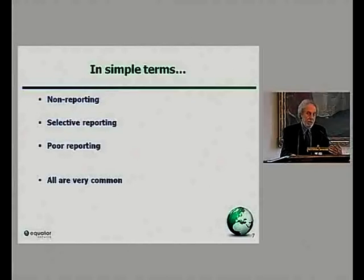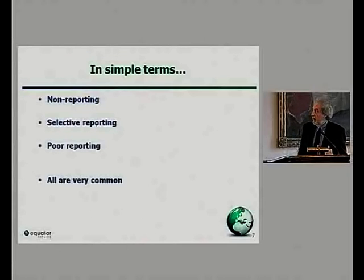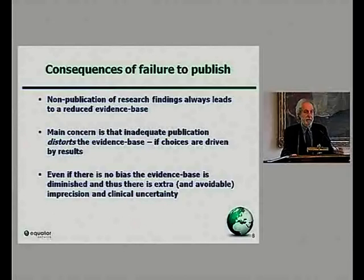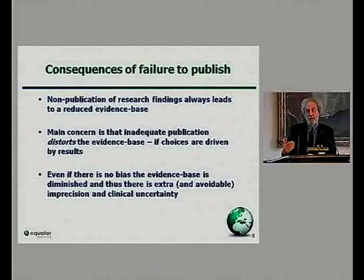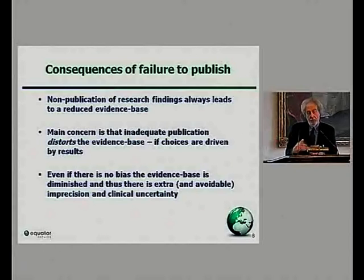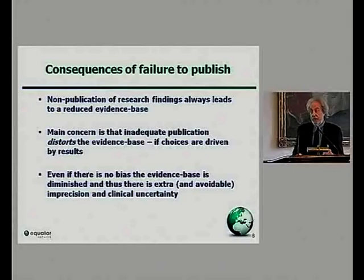In simple terms you have non-reporting, selective reporting, and poor reporting, and all of these have been shown empirically to be very common. Failure to publish means a reduced evidence base and more uncertainty. The big concern is that failure to publish is related to the results — statistically significant results are preferentially published. What we end up with is a diminished, biased evidence base with avoidable imprecision, unnecessary uncertainty, and possibly misleading subsequent research.